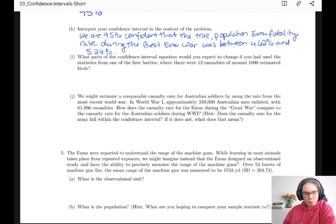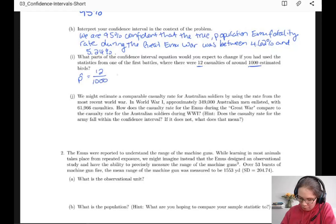Then we're asked what parts of the confidence interval would change if you used the statistics from one of the first battles where there were 12 casualties and 1,000 estimated birds. So p hat is going to be 12 over 1,000, which is going to be about 1.2 over 100, so 0.012.